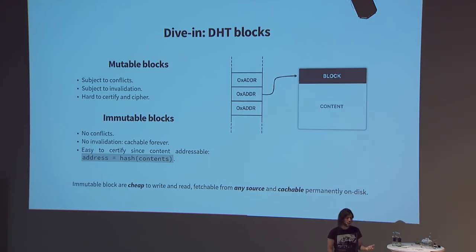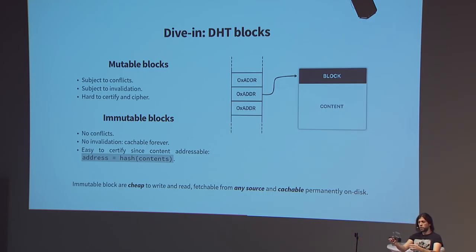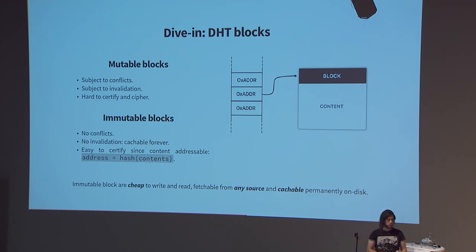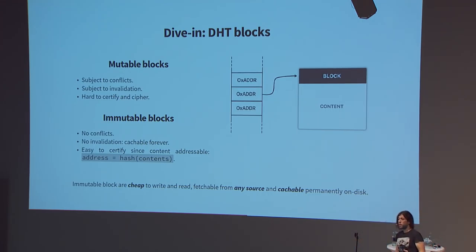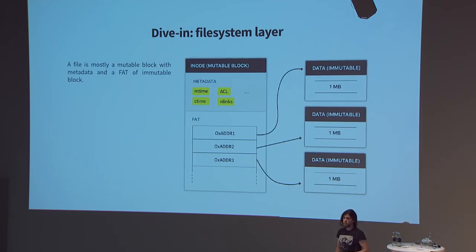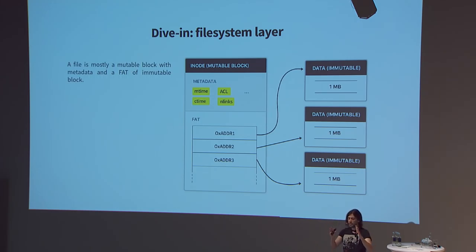You can be opportunistic on reads for immutable blocks — if a neighbor in your local network happens to have that block, you can fetch it from them without going to the actual server. Permanently cacheable means any time you fetch an immutable block, you can store it locally and it will always be valid. So when designing on top of the DHT, we try to use as many immutable blocks as possible and limit the number of mutable blocks.